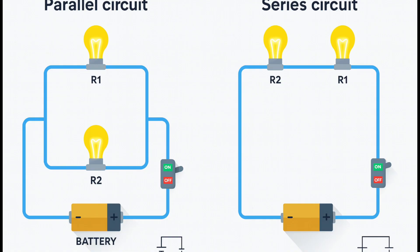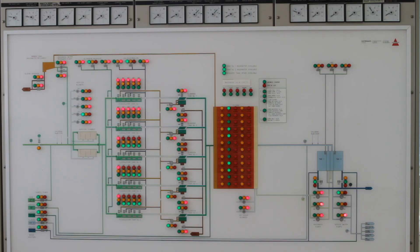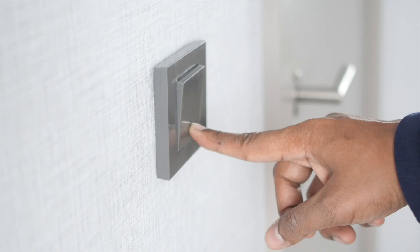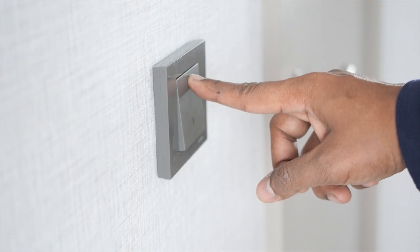A parallel circuit on the other hand connects components in a fork configuration. This means the current has multiple paths to travel. If one component fails, the others continue to work. This is why the lights in your home don't all go out if one bulb burns out.